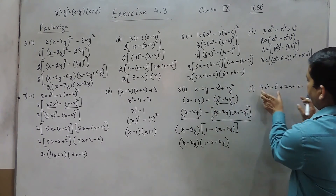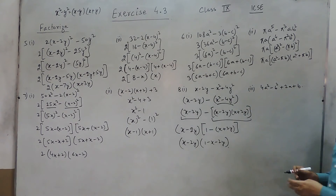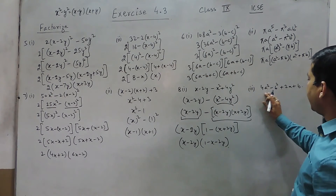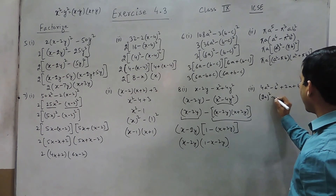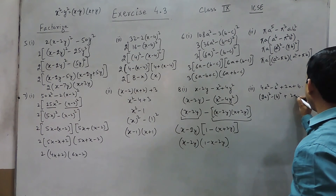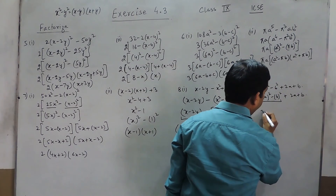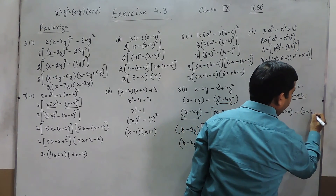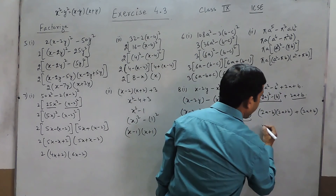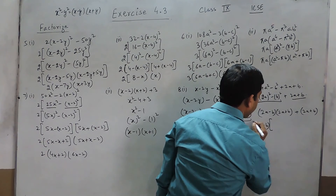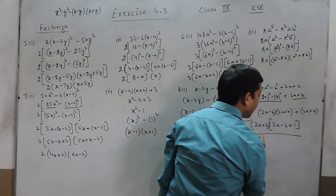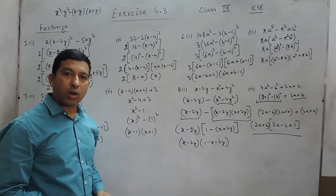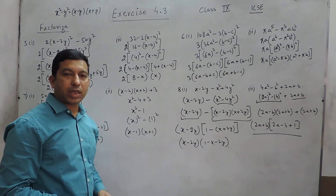The same method applies to this question; the only difference is the position of the terms. Whenever there are two perfect squares with a negative sign in between, we should apply the identity. This can be written as (2a)² - b² + (2a + b), which factors as (2a + b)(2a - b) + (2a + b). Taking (2a + b) as common, the final answer is (2a + b)(2a - b + 1). This is the factorization of question number 8. If you have any problems, you can email us. In the next class we will talk about question number 9 onwards. Thank you.